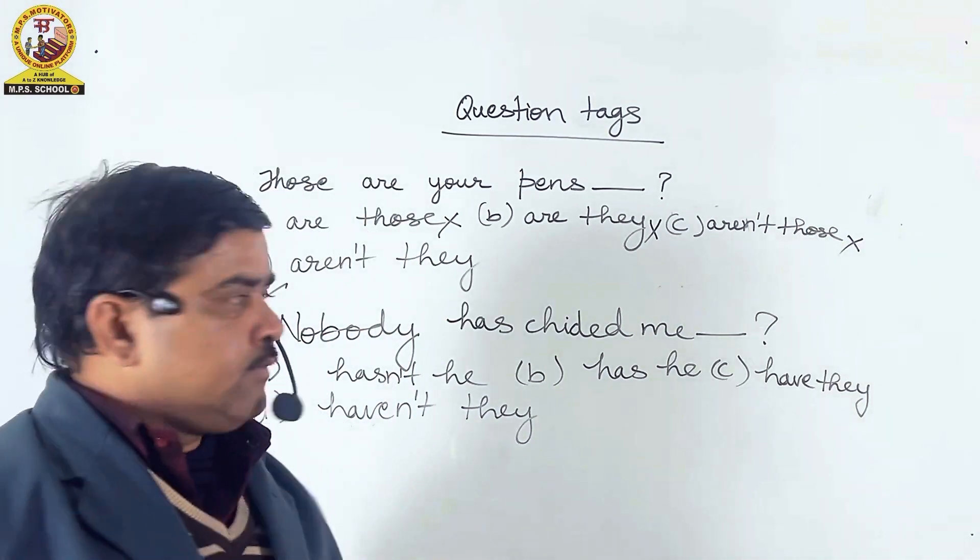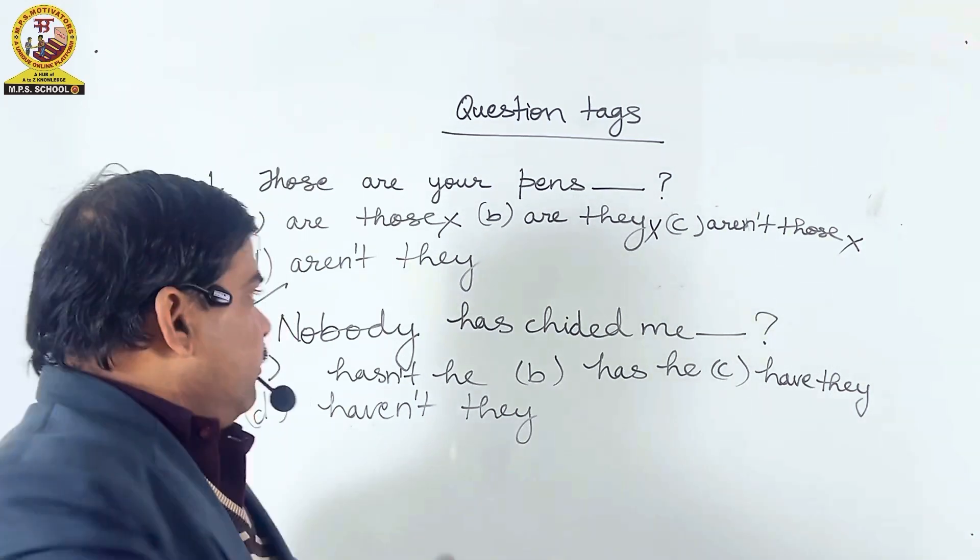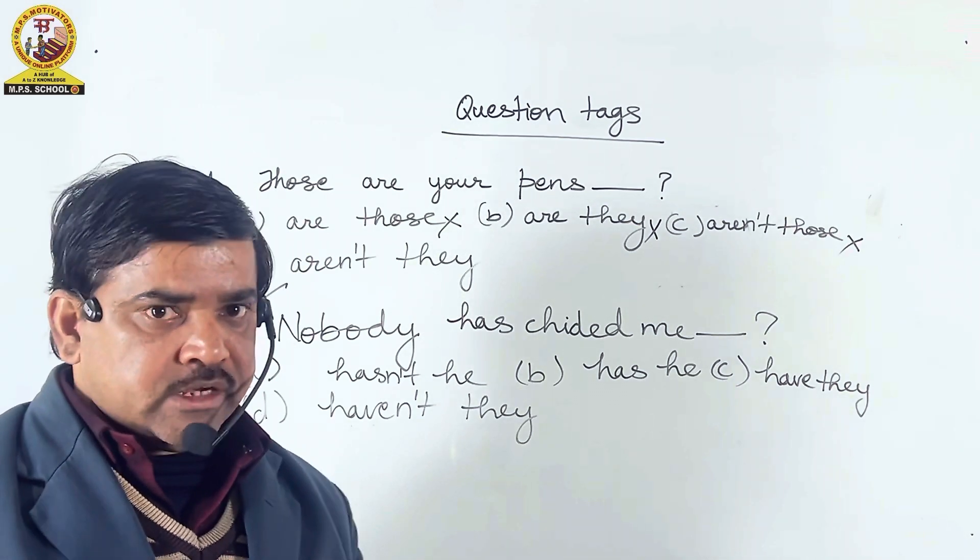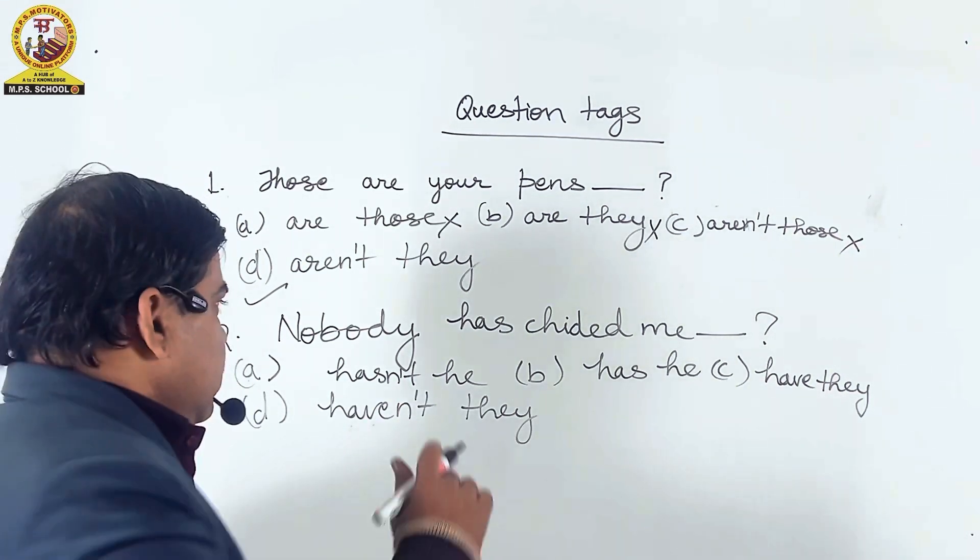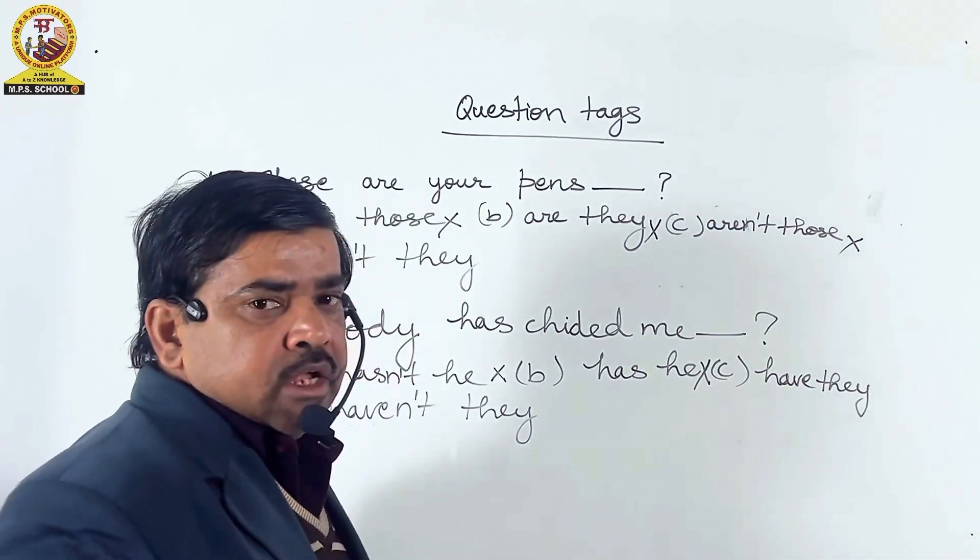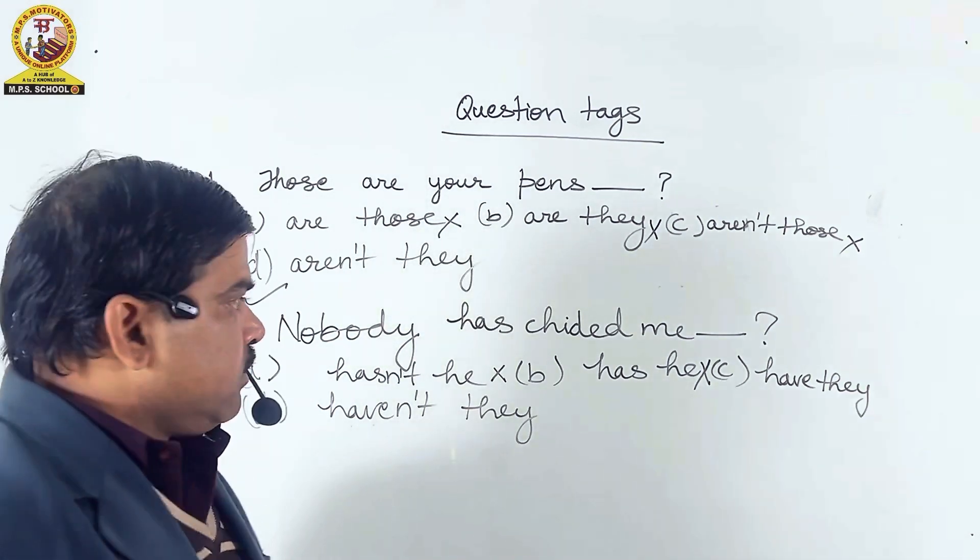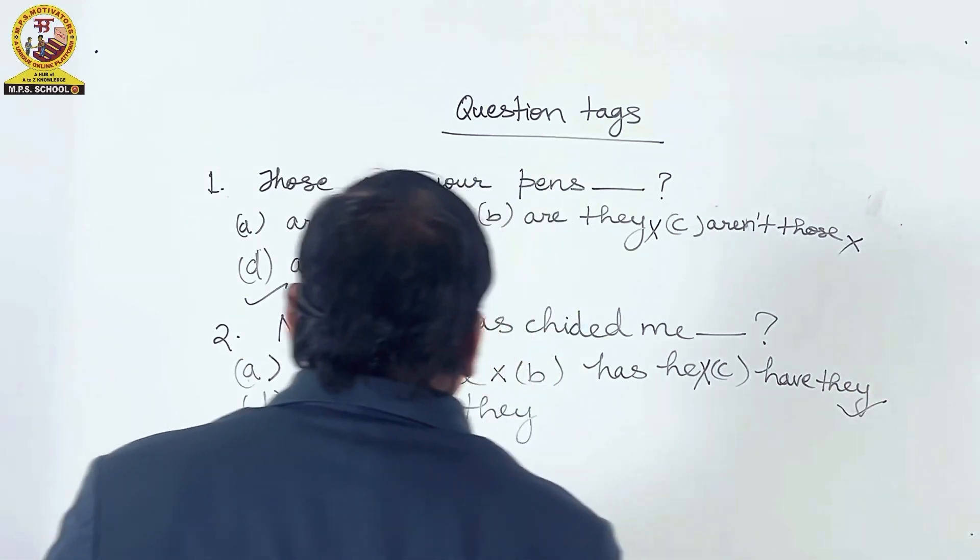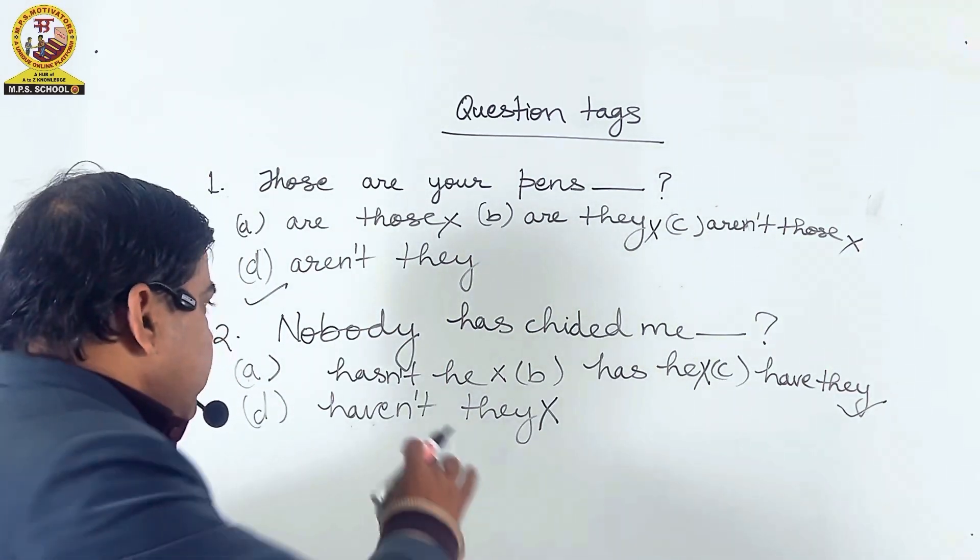Friends, our second question is: Nobody has cheated me. If nobody is used as the subject, we use they as the subject of question tag. So we have to see in which options they is used. Here, he is used, so it cannot be the right option. It can also not be the right option. Have they and haven't they both have they as the subject of the question tag. So here, have they is the right option and haven't they is the wrong option, because nobody is already negative, so here we cannot use haven't.